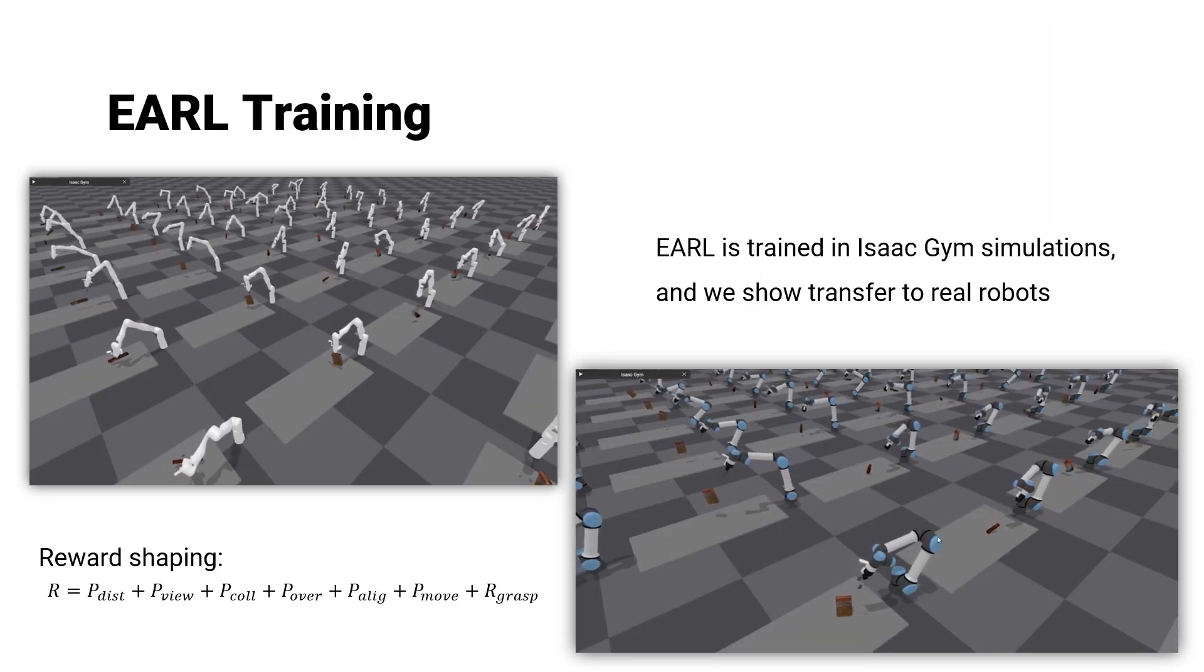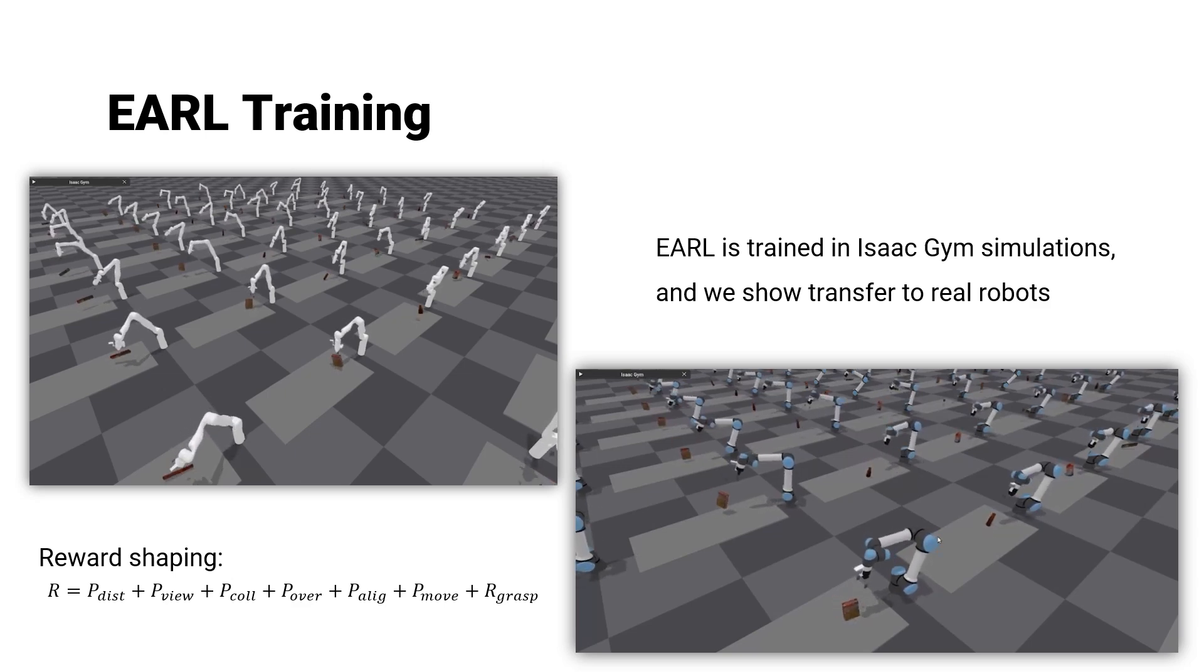The control policy is trained exclusively within a simulated environment. The reward shaping incorporates multiple factors including the distance between the object and the gripper, the object's centrality within the camera's field of view, and the distance between the grasp pose and the gripper pose.